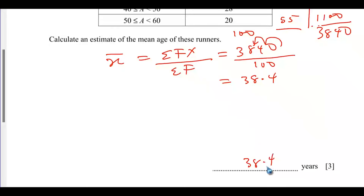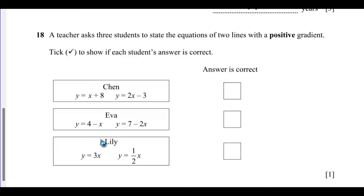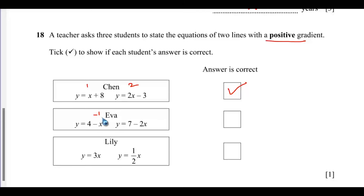Question 18: A teacher asks three students for equations of two lines with a positive gradient. First student: y = x + 8 (gradient 1, positive) and y = 2x (gradient 2, positive) — correct. Second student: y = −x + ... (gradient −1) and gradient −2 — incorrect. Third student has gradients 3 and 1/2, both positive — correct. So the first and last students are correct.